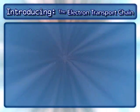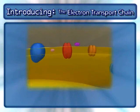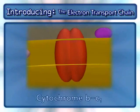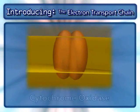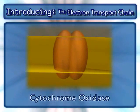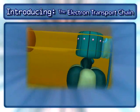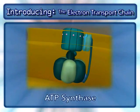The following complexes are found in the electron transport chain: NADH dehydrogenase, cytochrome BC1, cytochrome oxidase, and the complex that makes ATP — ATP synthase.